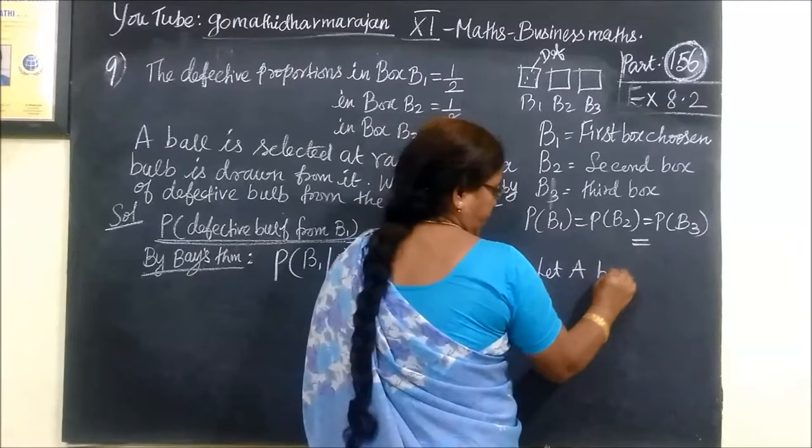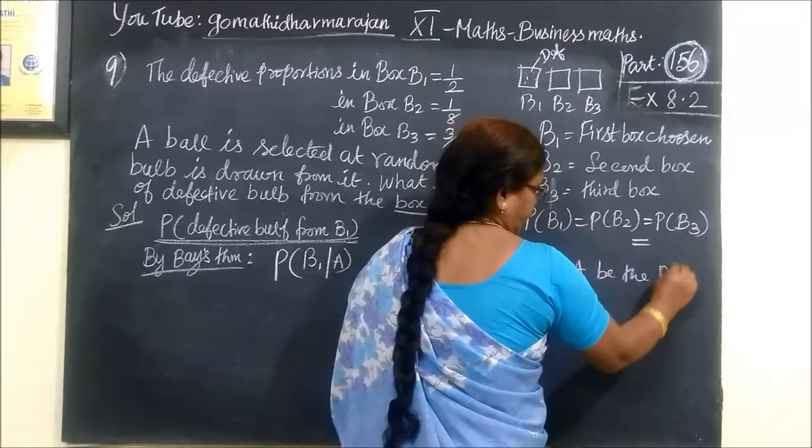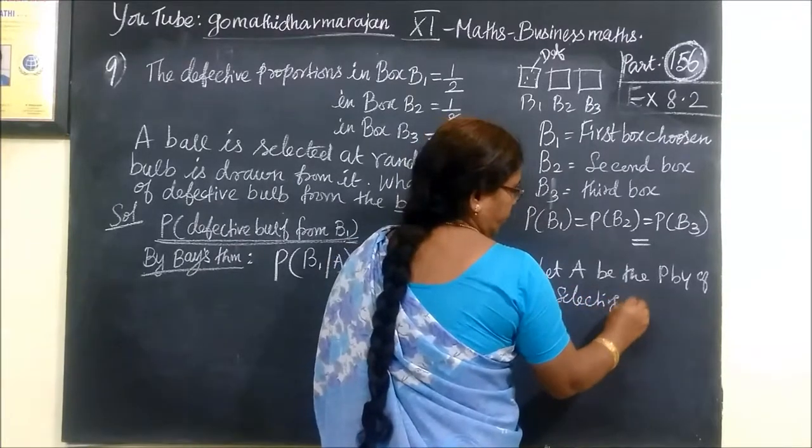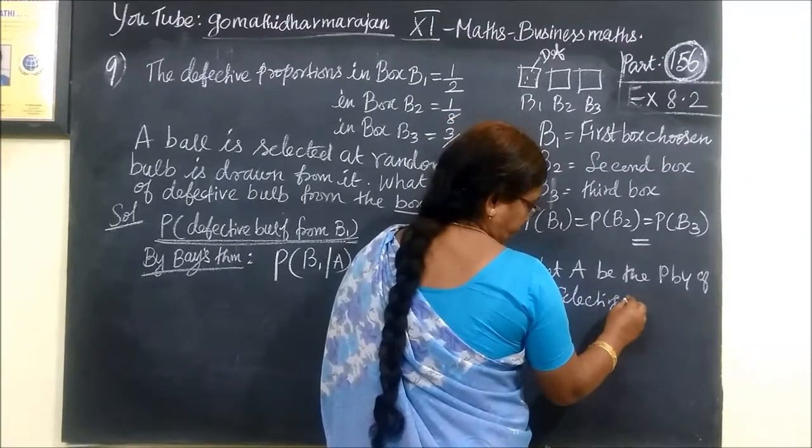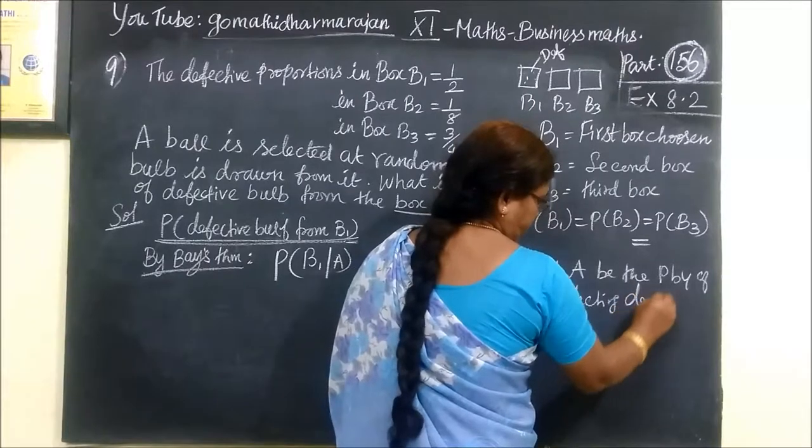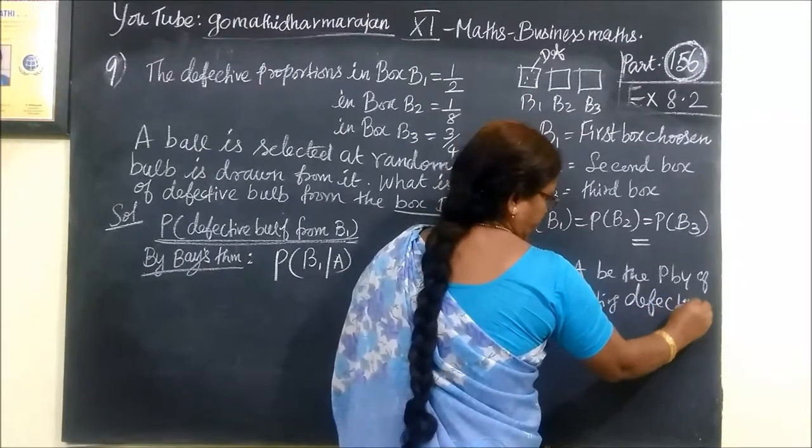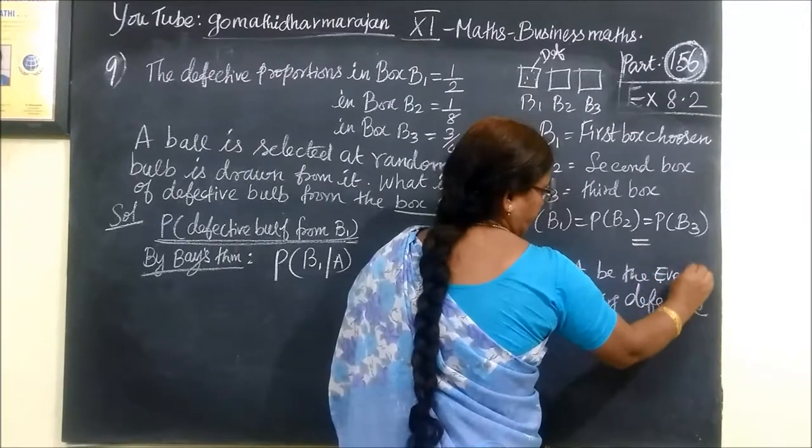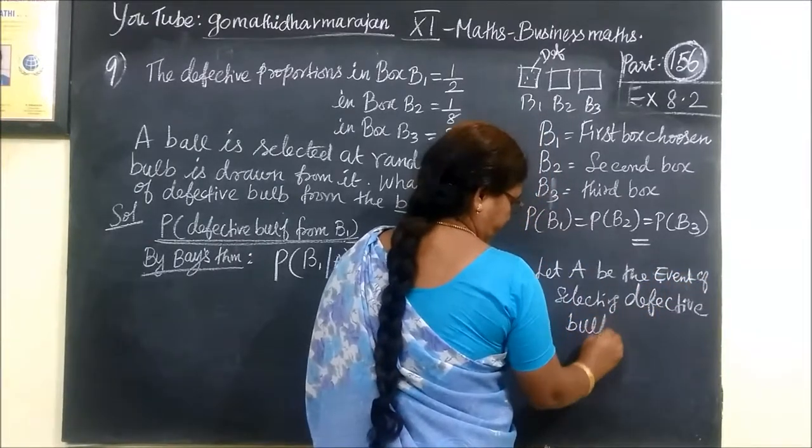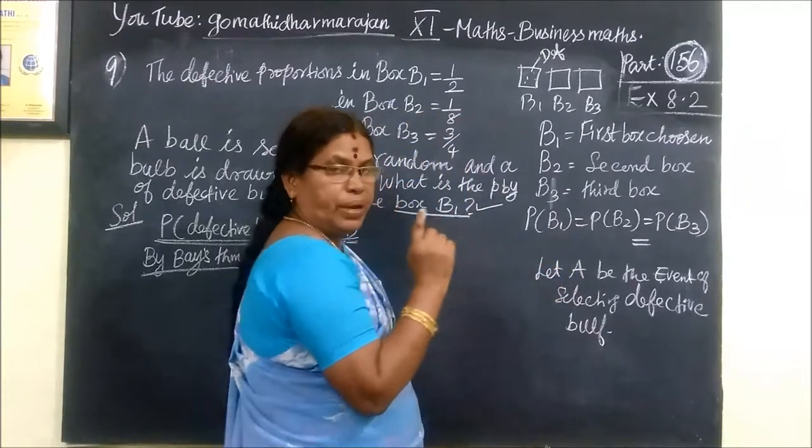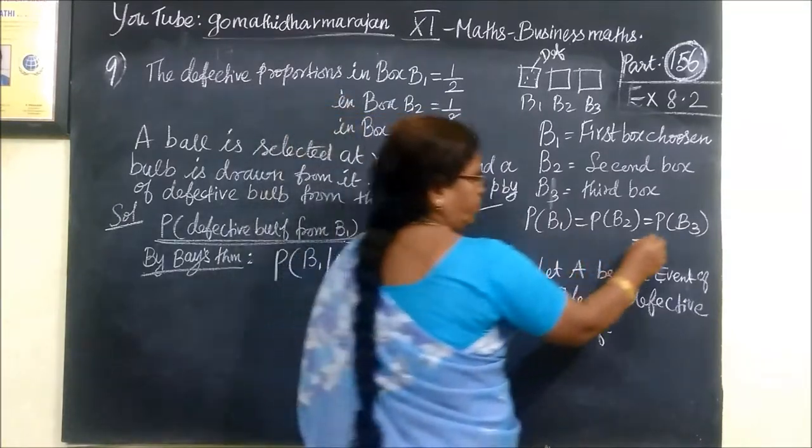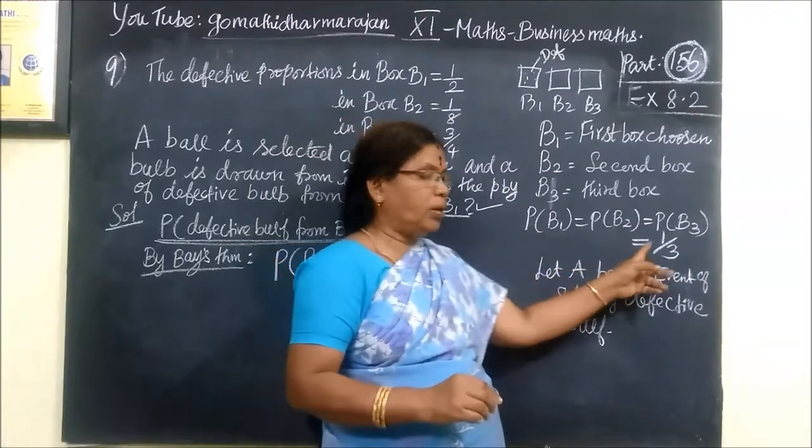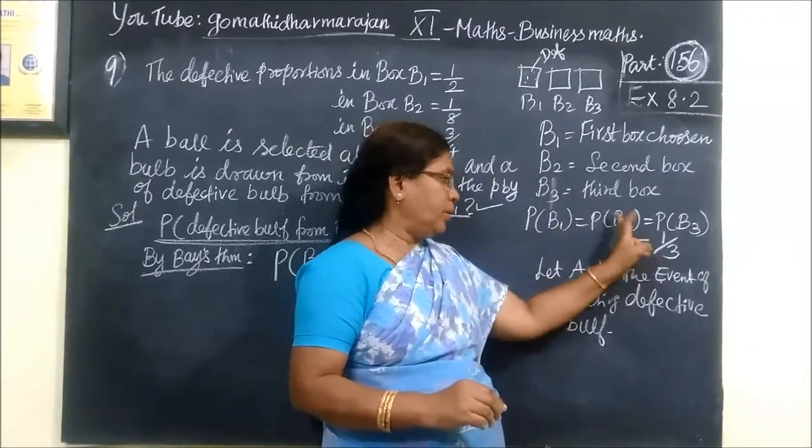Let A, B. The probability of selecting defective bag. Event of selecting defective bag. P of B1, B2, B3 equal to 1 by 3. 1 bag.